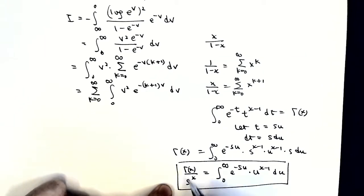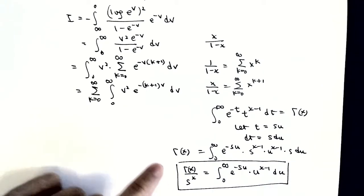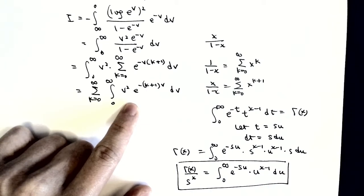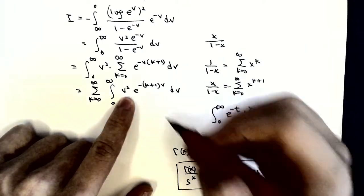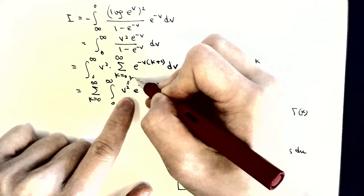So gamma of x over s to the power of x equals this integral times u to the x minus 1 du. We will make use of this identity here on this integral.